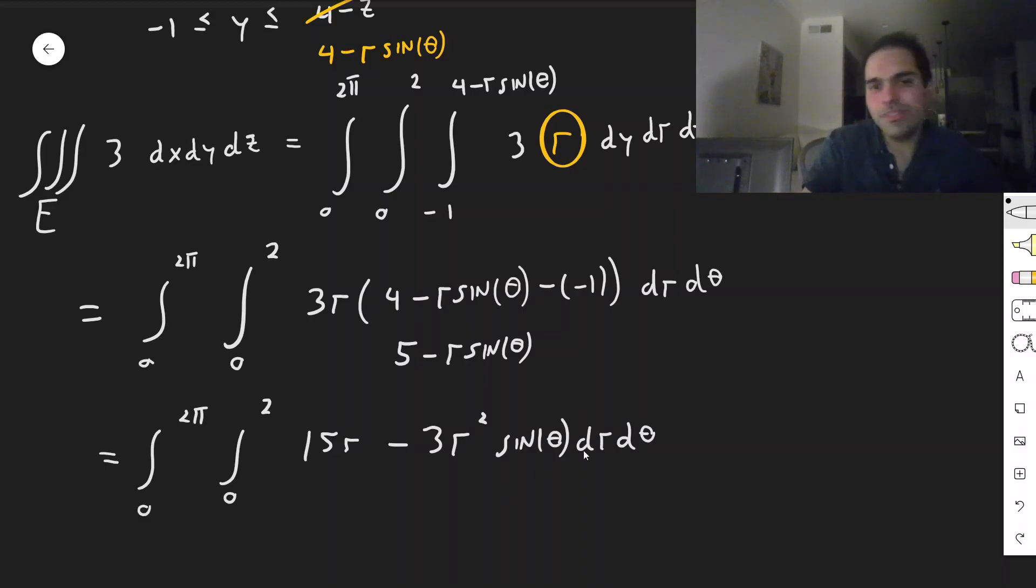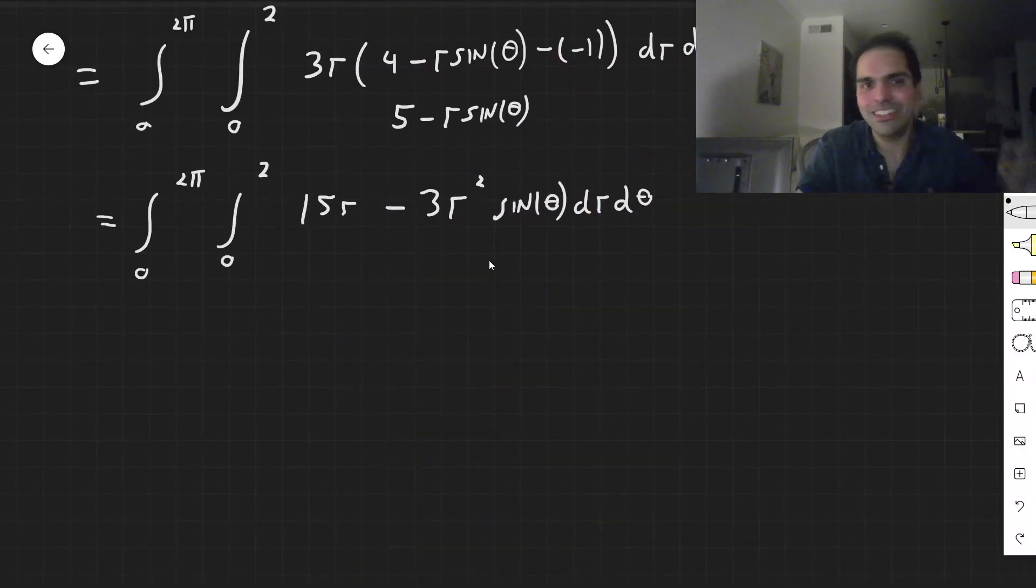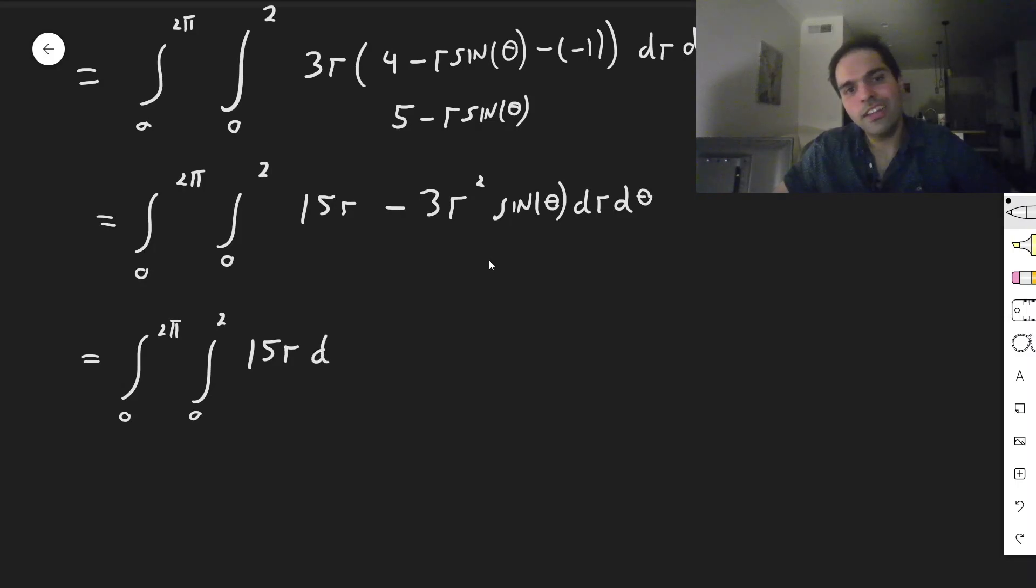And sure, I mean, you can think, well, sine of theta becomes minus cosine theta. And that just becomes 0. But let's just do a step back. So then this becomes integral from 0 to 2 pi, integral from 0 to 2, 15r dr d theta, plus integral from 0 to 2 pi, integral from 0 to 2, minus 3r squared sine of theta dr d theta.